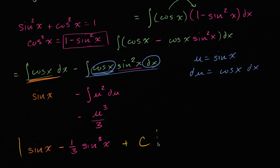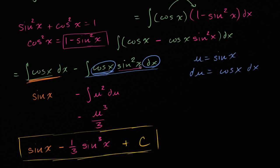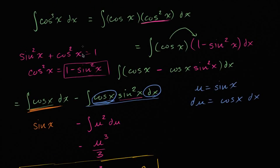And then now, now we can throw that plus c there. And we're done, we've just evaluated that indefinite integral. And the key to it is to just play around a little bit with trigonometric identities. So that you can get the integral to a point that you can use the reverse chain rule. Or you could use u substitution, which is just really another way of expressing the reverse chain rule.